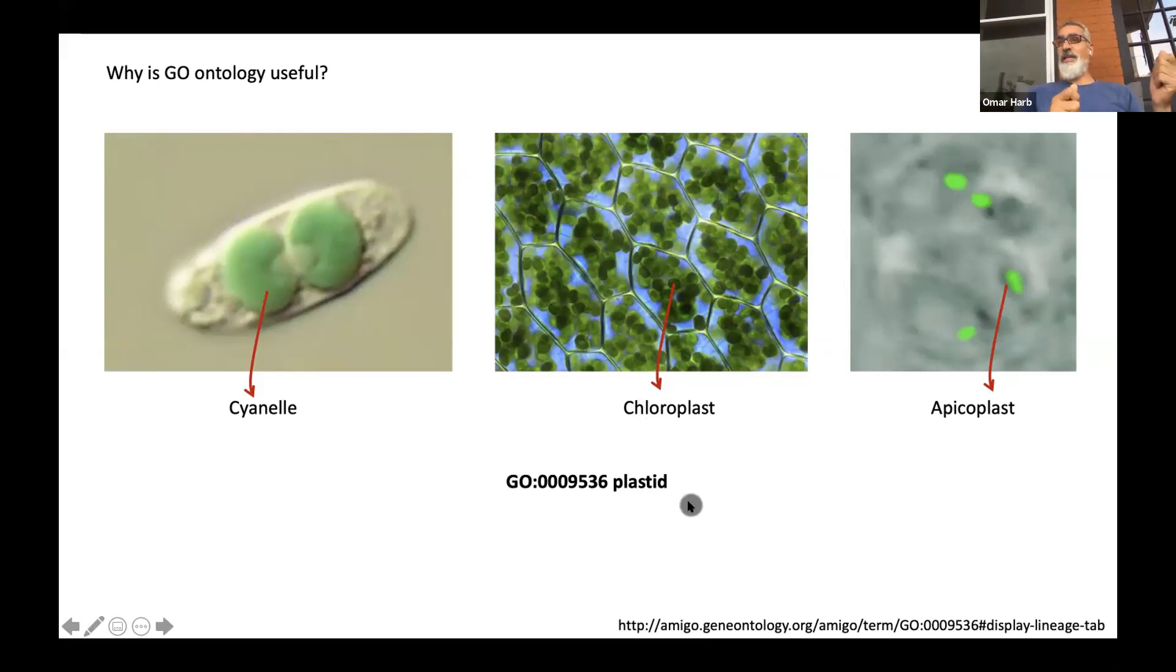And so now this becomes very advantageous for finding connections across the tree of life or within a particular organism. If you're able to take all the genes that function in the apicoplast plastid and give them the GO term for plastid, now you have something that unifies them. There's no way to know just by looking at the name of the gene—if this is an acyl carrier protein or a ferredoxin—that both actually function in the plastid, unless they both have information that says they are. The GO terms allow you to do that.